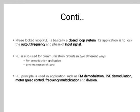The phase lock loop is basically a closed loop system. Its application is to lock the output frequency and the phase of the input signal. It is also used for the communication circuit in two different ways: for demodulation application and for synchronization of the signal. The PLL principle is used in applications such as FM demodulation, FSK demodulation, motor speed control, frequency multiplication, and division.